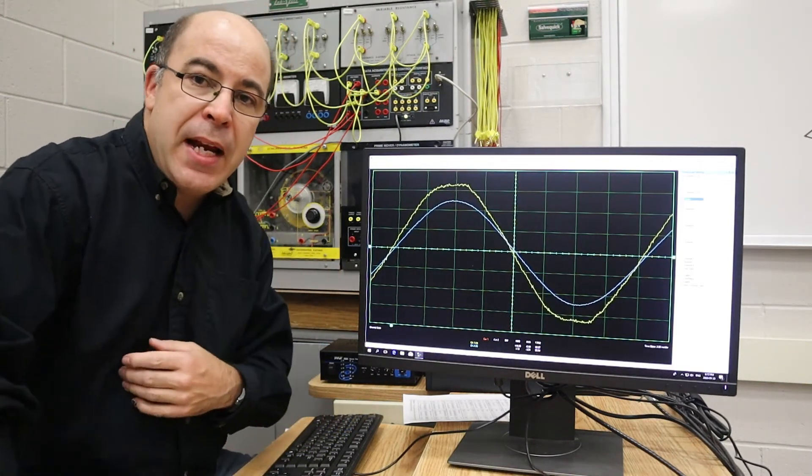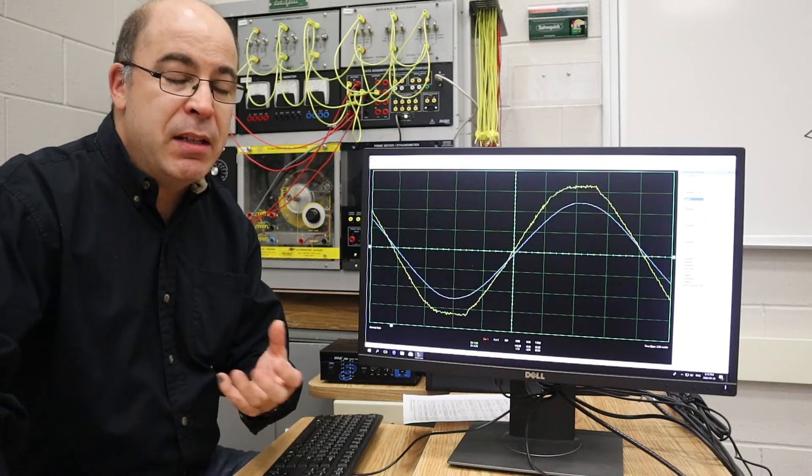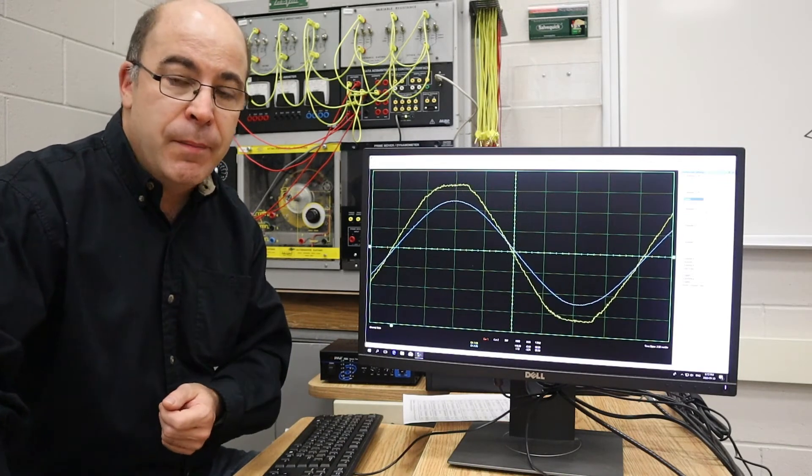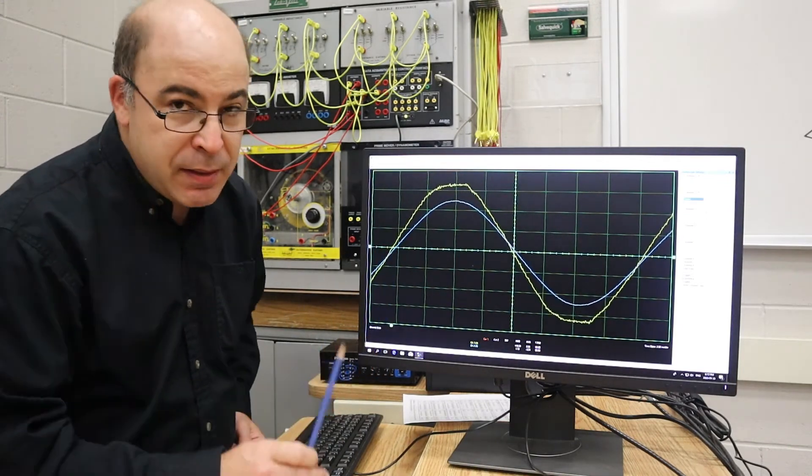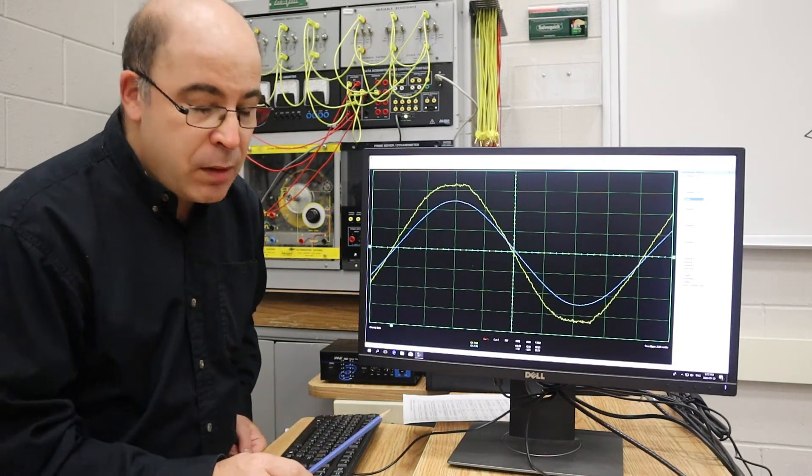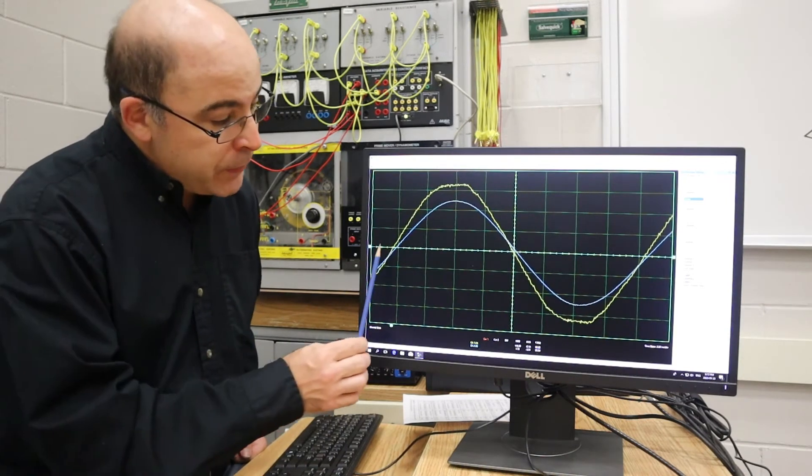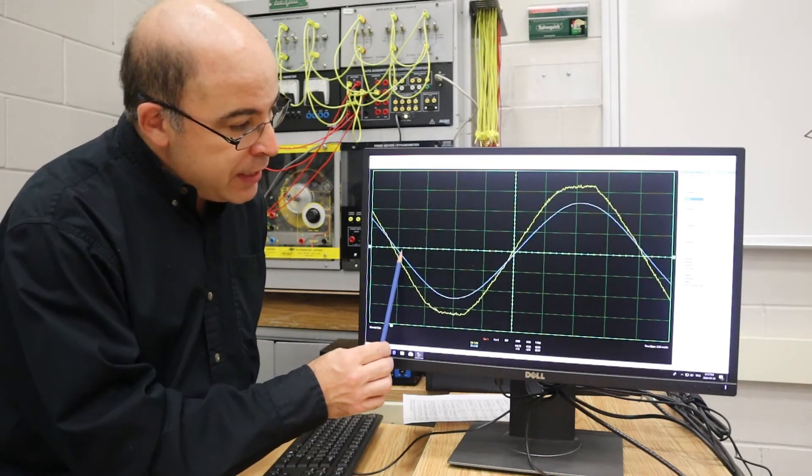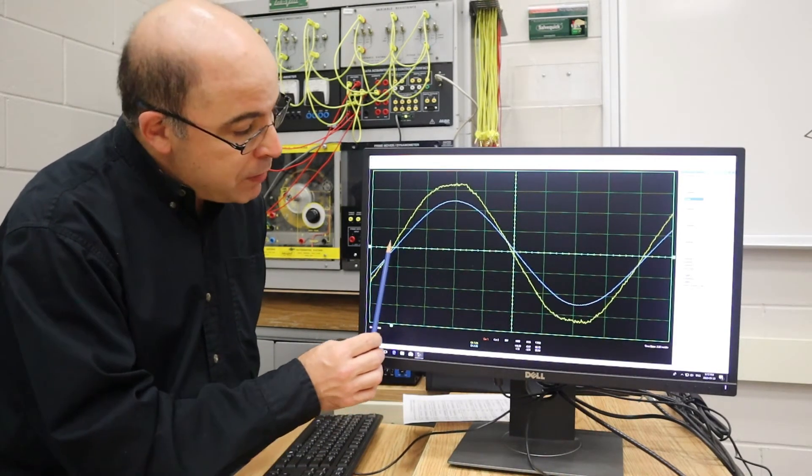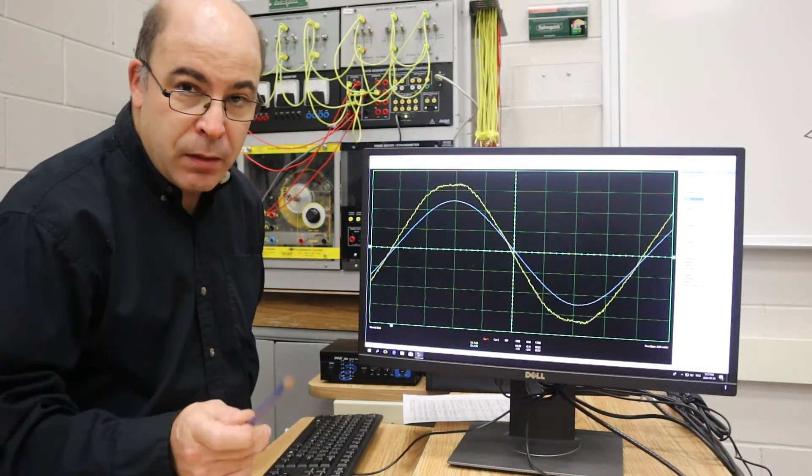Now, what about if I started to take some capacitance out of the circuit? I said earlier that capacitors basically help negate the negative effects of an inductor. If I take capacitance out of the circuit, what's going to be the net result? I know for a fact that I'm going to see an increase in the phase angle difference between my voltage and current. So let's see.